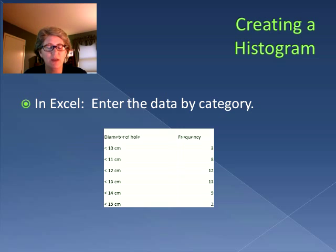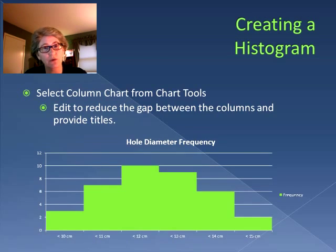From this we then plot it using the chart tools. We select the column chart and then edit it to reduce the gap between the columns and provide titles. So creating a histogram is fairly simple. We are taking a frequency distribution of data and graphing it to see the shape of it. Next time we'll be talking about another tool. I'll see you then.